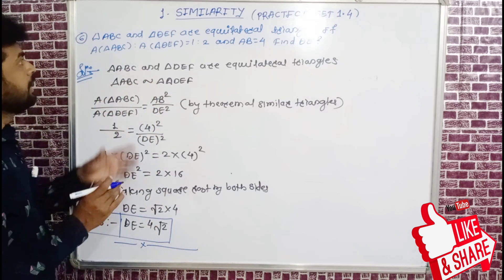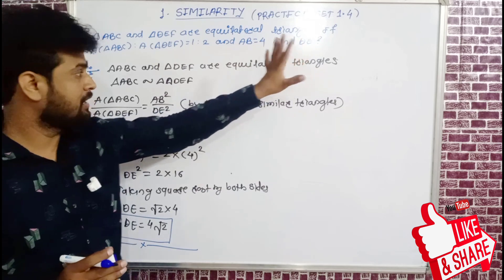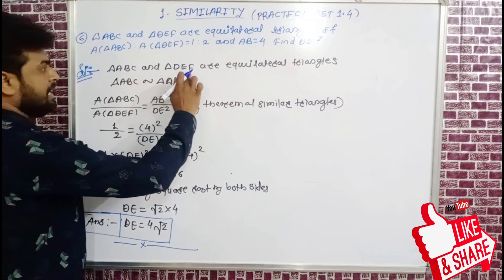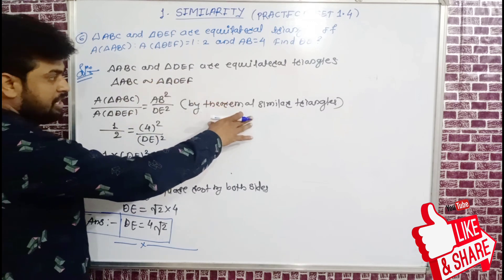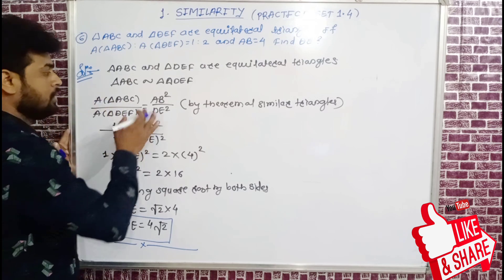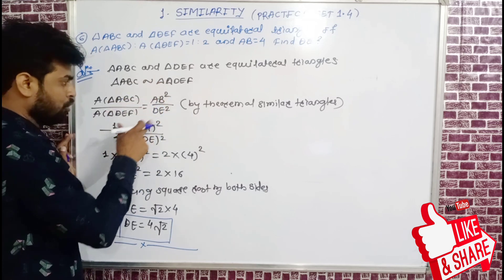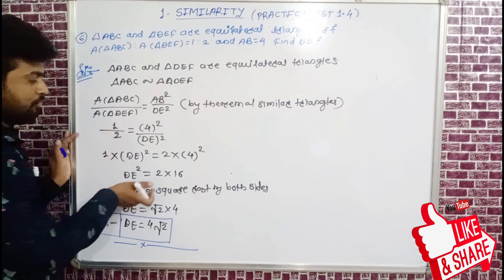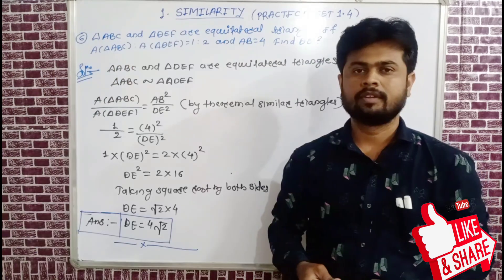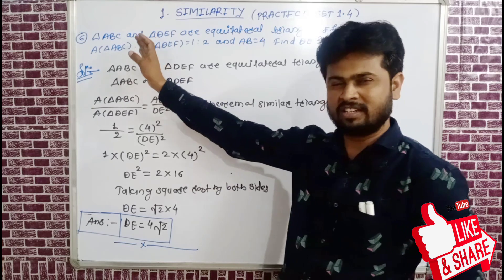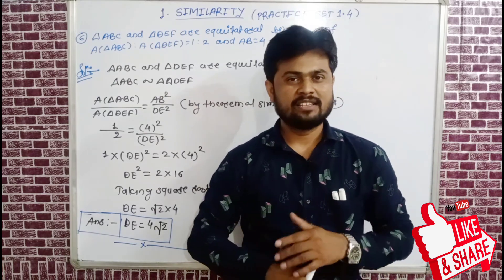So for Example 6, triangles ABC and DEF are equilateral, their area ratio is 1 ratio 2, AB side is 4, and after substitution and value distribution DE equals 4 root 2. Take a screenshot of this example and try to solve it yourself. If you haven't liked and subscribed to my YouTube channel yet, please like and subscribe. Thank you.